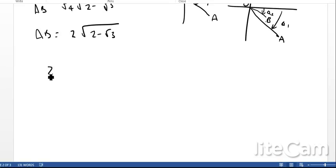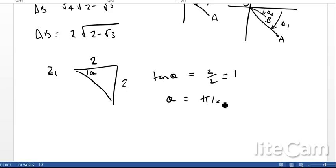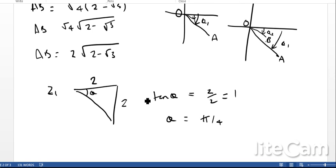For z₁, if we sketch our triangle, we've got this is 2 and this is also 2. Therefore, tan θ is 2 over 2, which is 1. Therefore θ is π/4. Technically it's -π/4 because we're going downwards, but for this question, because both angles would be negative, it doesn't matter. We'll count θ₁ as π/4.